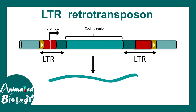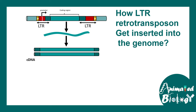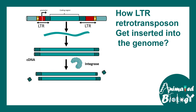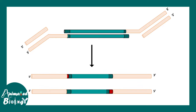After a successful round of transcription, LTR retrotransposon mRNA is generated. The LTR retrotransposon first generates mRNA, which gets reverse transcribed by reverse transcriptase to produce a cDNA. The cDNA is then clipped at the ends by the enzyme integrase, generating free 3' hydroxyl groups that can attack the target DNA. Any open gaps are then filled by the cellular repair machinery, completing integration into the genome.